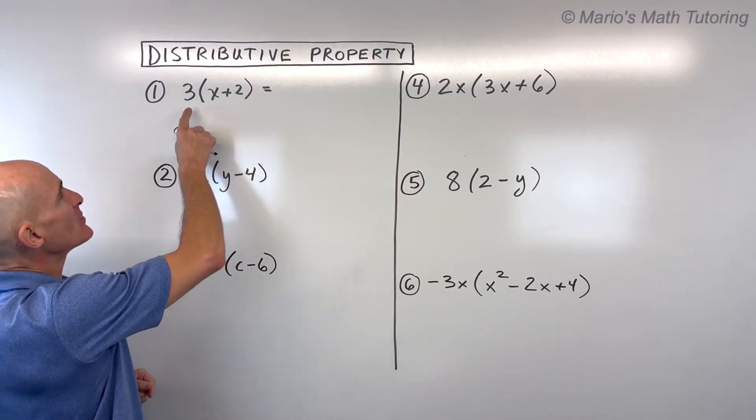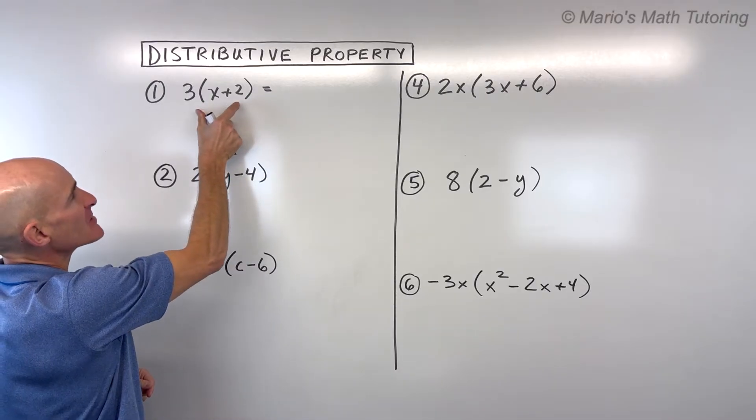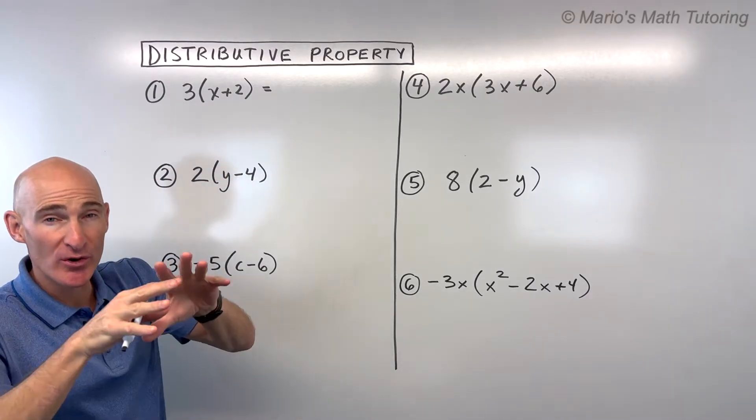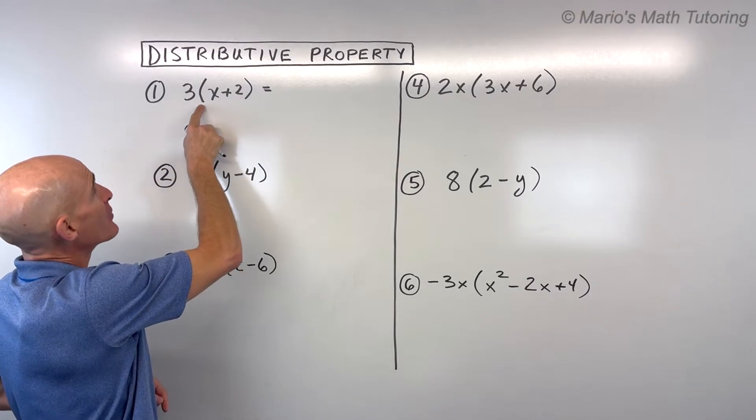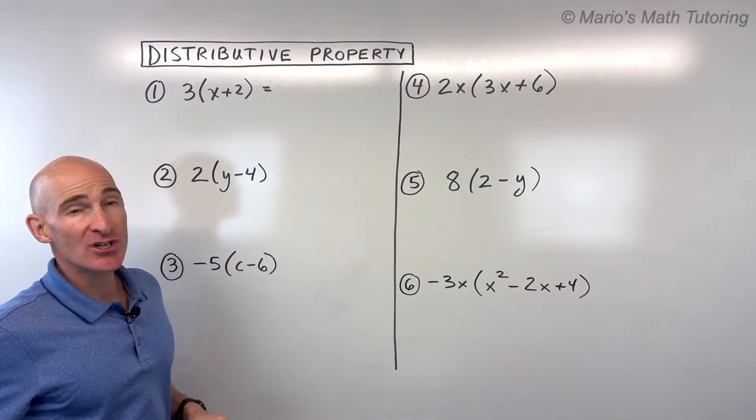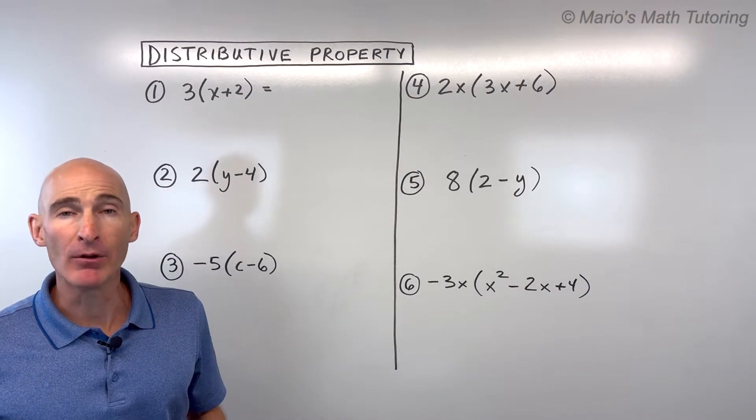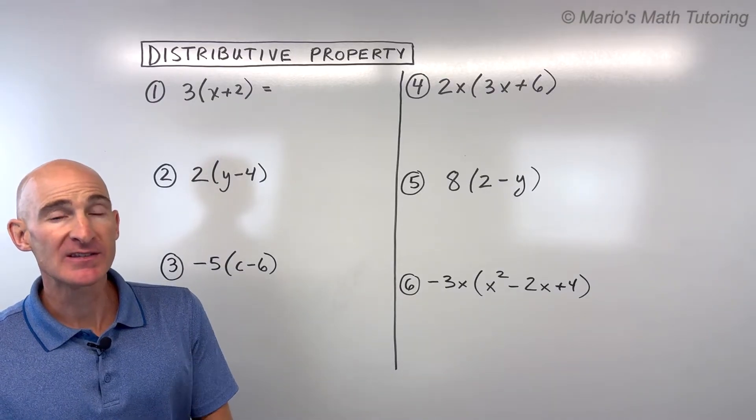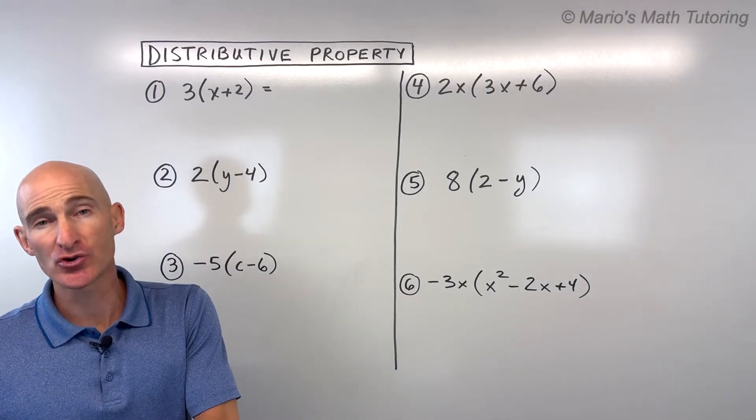The first example here, you can see we have this three times this quantity x plus two. Notice it's in parentheses, and the three and the parentheses are right next to each other, which means that it's a multiplication problem. Now, one way to look at this is kind of the long way to do it, and I'll show you the short way.